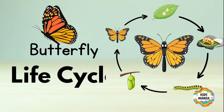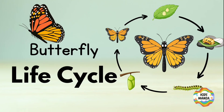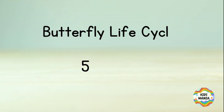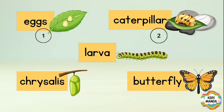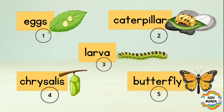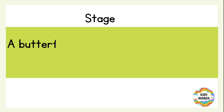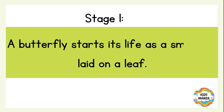Butterfly life cycle. There are five stages of the butterfly life cycle. Stage one: a butterfly starts its life as an egg laid on a leaf.